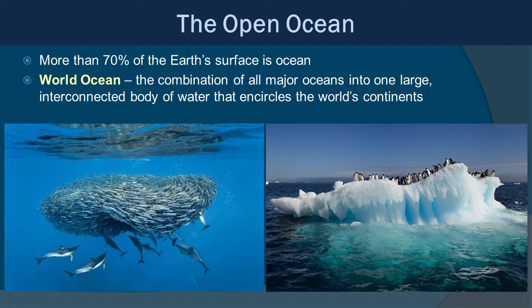We've mentioned this before, but the Earth is truly a blue planet. More than 70% of the Earth's surface is ocean. We call the World Ocean the combination of all the major oceans into one large interconnected body of water that encircles the world's continents.